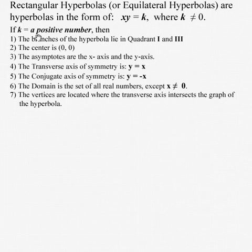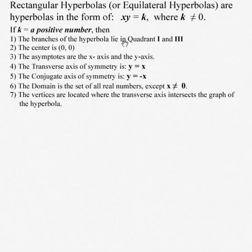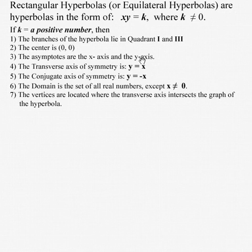We're going to look to see whether k is a positive number or a negative number. If it's a positive number, the two branches of the hyperbola are in quadrants 1 and 3. In either case, the center is at (0, 0), and the asymptotes in both cases are the x and the y axis. In this case, the transverse axis — the one that goes through the vertices — is y equals x.